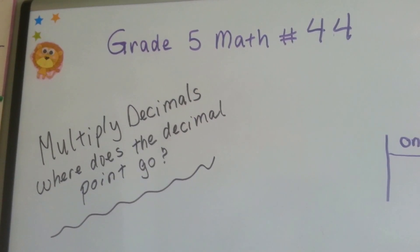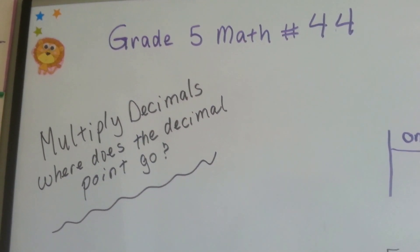Grade 5 math, number 44. Multiply decimals. Where does the decimal point go?